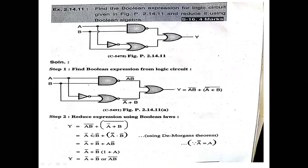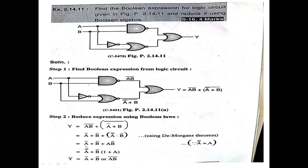Applying De Morgan's theorem to the first term: A into B bar — that is A bar plus B bar by De Morgan's. For the second term, the bar over A bar plus B bar: by De Morgan's duality theorem, the plus operator is replaced by dot, giving A bar into B bar. So the equation becomes: A bar plus B bar plus A into B bar.